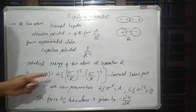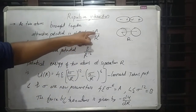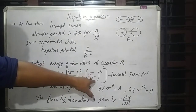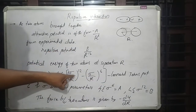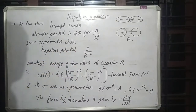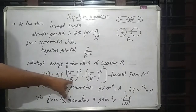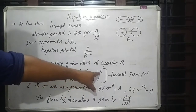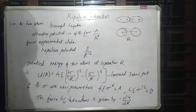U of R equals the attractive interaction proportional to minus 1 over R raised to 6, and the repulsive interaction which is 1 over R raised to 12. So U of R equals 4 epsilon times the quantity sigma over R raised to 12 minus sigma over R raised to 6, which is called the Lennard-Jones potential.